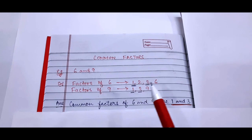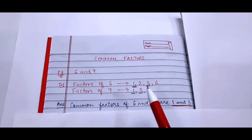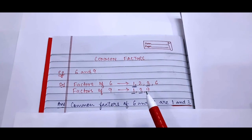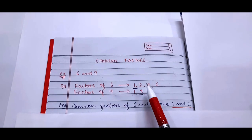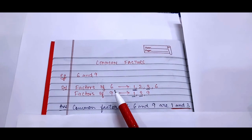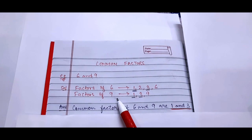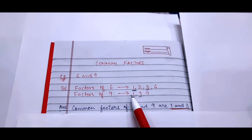Now as we can see here the factors 1 and 3 are present in both the cases. Like see 1 is a factor of 6 as well as 9. Similarly 3 is a factor of 6 as well as 9. It means 1 and 3 are common in both the cases.